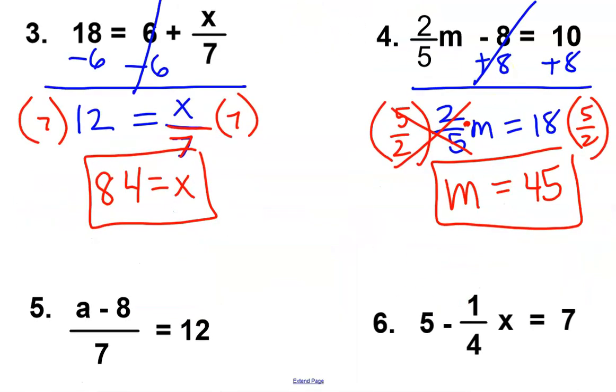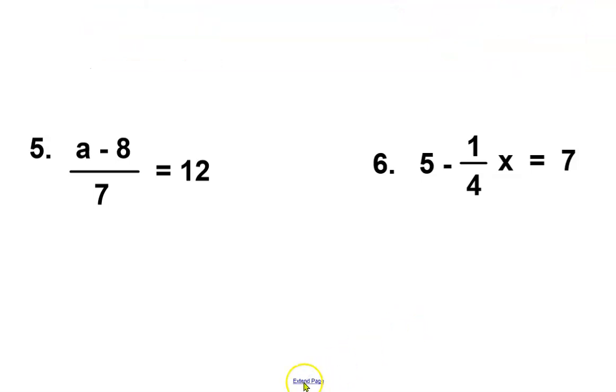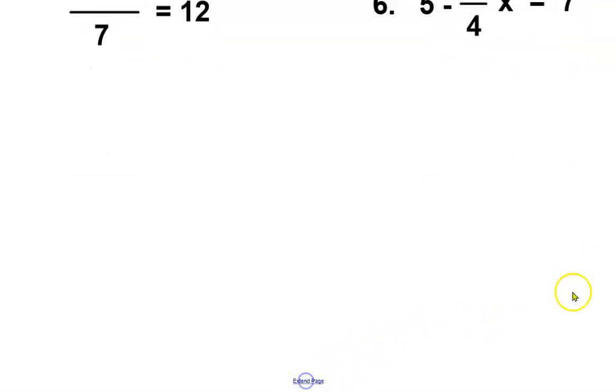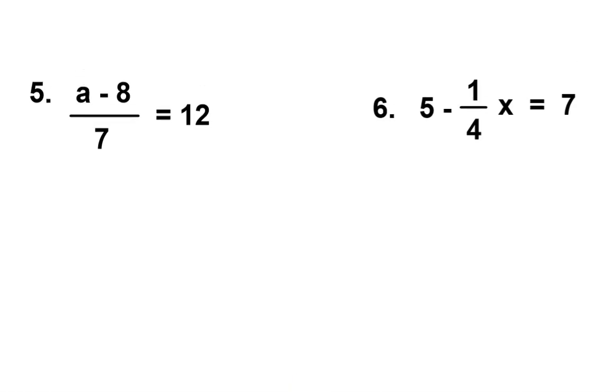Alright, last two. Now question number 5 has a sentence in the numerator. So I cannot add 8. Because that 8 is part of a fraction. So I need to clear that fraction first. I need to get rid of that dividing by 7. The inverse of dividing is multiplying. That was easy enough.